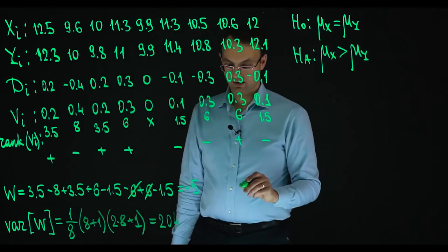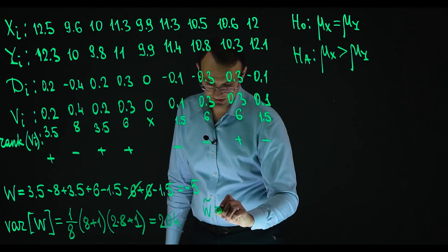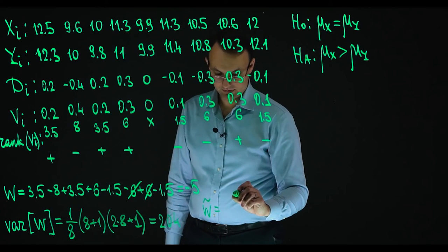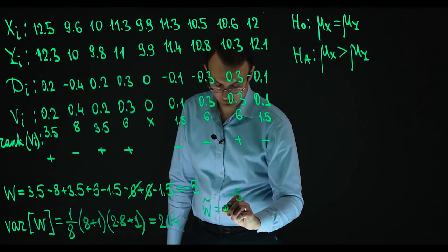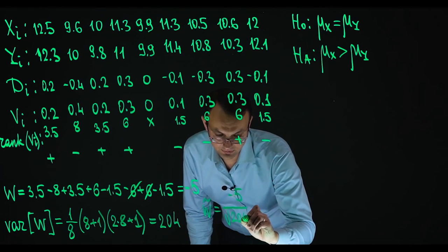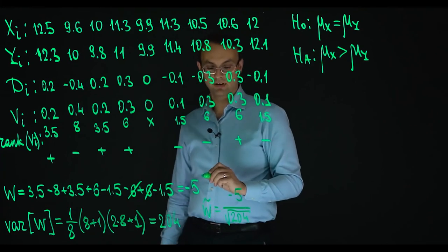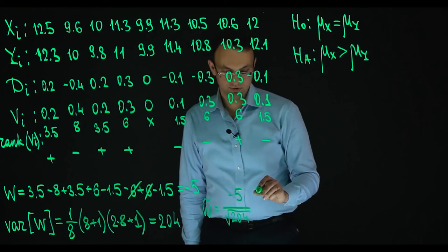And then normalized W. W tilde is W minus 5 divided by square root of the variance of 204. And this is approximately equal to minus 0.35.